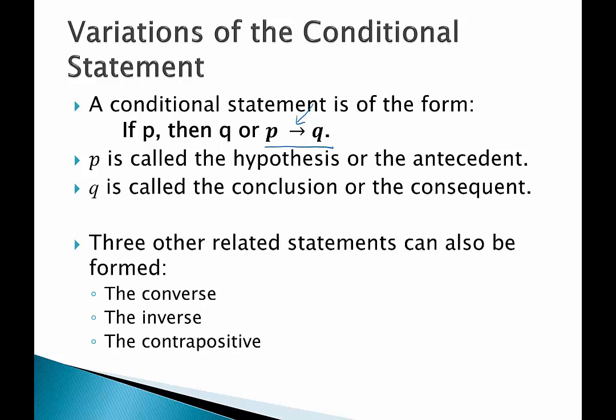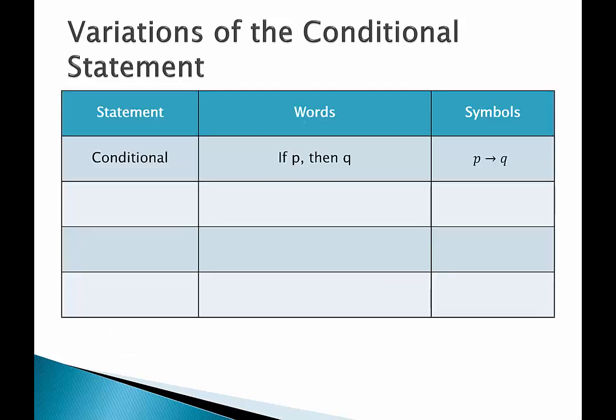The three related statements are the converse, inverse, and contrapositive. The interesting thing about all of these statements is that they are all conditional statements themselves. It's just that if we have a conditional statement there are three corresponding statements to it. So first we have our conditional statement — in words that's if P then Q, and with the symbol we would just put the arrow there.